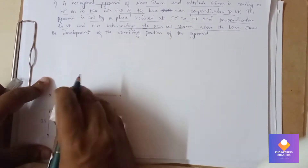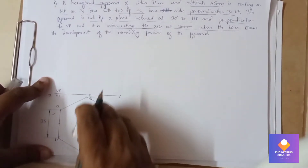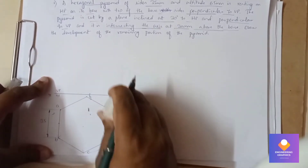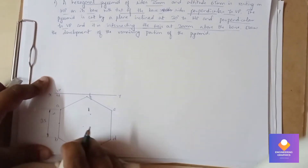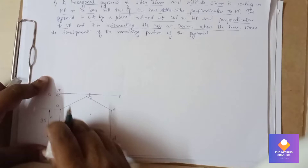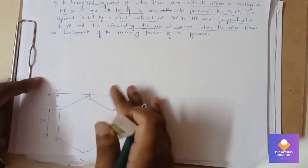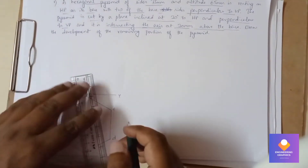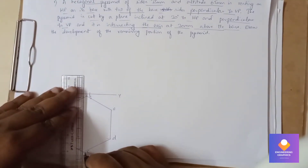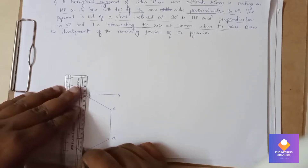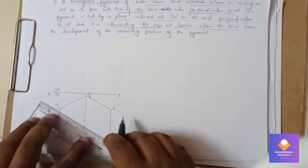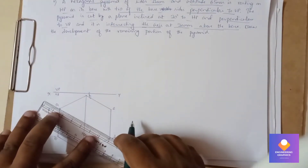Since this is a pyramid, we will be drawing diagonals to show the slant edges.